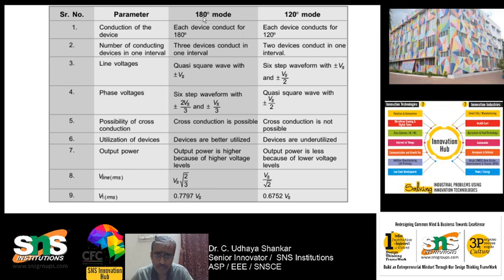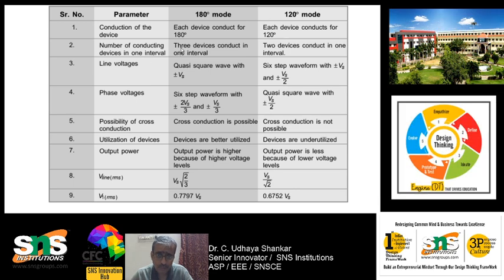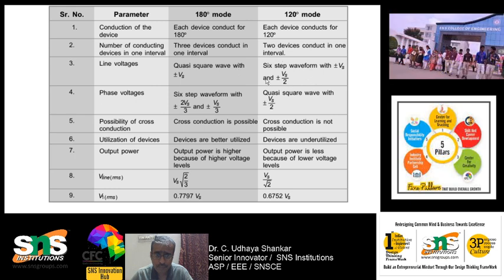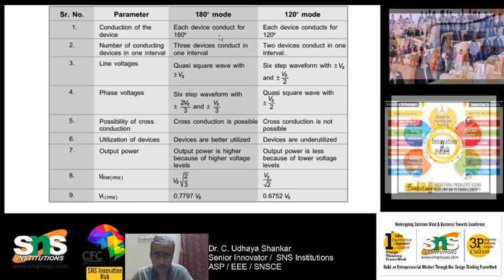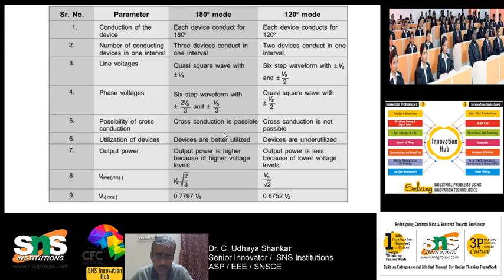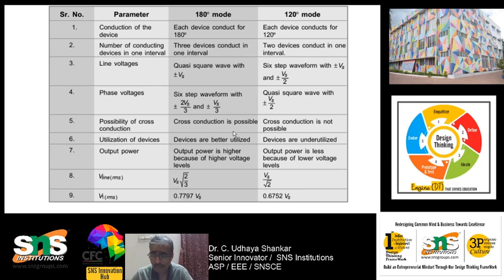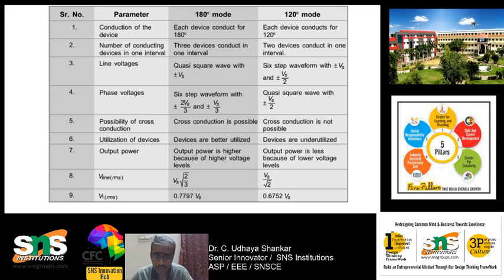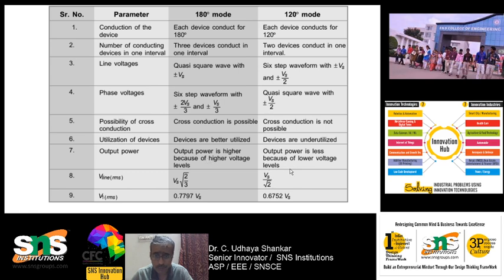A comparison: in 180-degree mode each device conducts for 180 degrees, whereas in 120-degree mode each device conducts for 120 degrees. In 180-degree mode, 3 devices conduct per interval; in 120-degree mode, only 2 devices conduct per interval. The line voltage in 180-degree mode is a quasi-square waveform, whereas in 120-degree mode it is a six-step waveform. The phase voltage is a six-step waveform in 180-degree mode and a quasi-square waveform in 120-degree mode. Cross conduction — where transistors in the same leg may trigger simultaneously causing a short circuit — is possible in 180-degree mode but not in 120-degree mode due to the 60-degree gap. Device utilization is better in 180-degree mode.